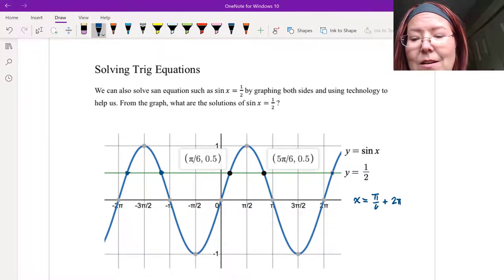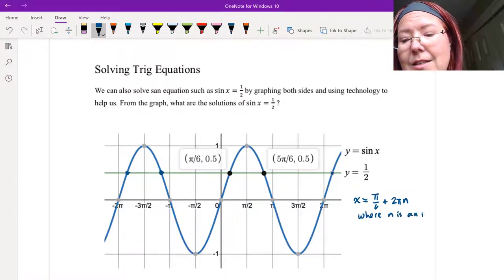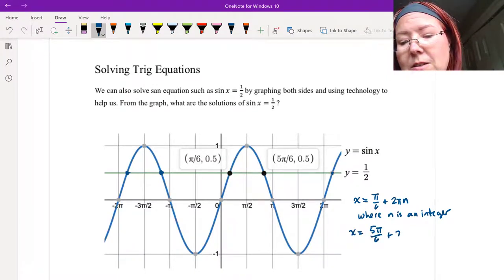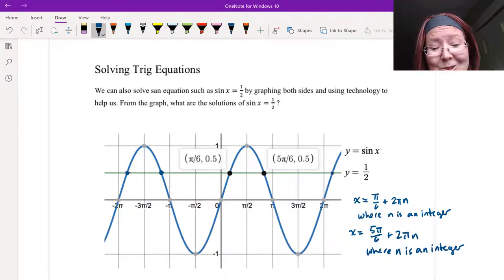And so essentially plus 2 pi n where n is an integer, and we'll have another set of solutions that x equals 5 pi over 6 plus 2 pi n where n is an integer. So those are all the solutions.